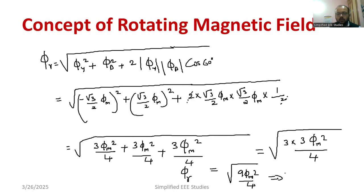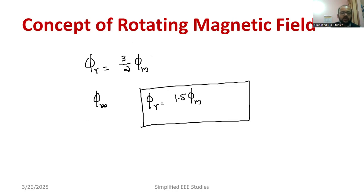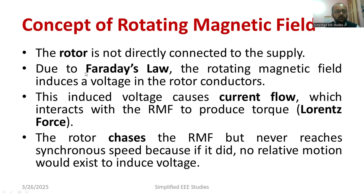Therefore Φ_R equal to 3 by 2 Φ_M. So again you simplify, Φ_R equal to 3 by 2 Φ_M. So the resultant flux is nothing but 3 by 2 multiplied by maximum flux. This is the final derivation for the concept of Rotating Magnetic Field.